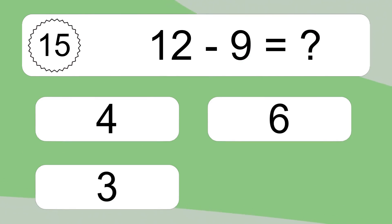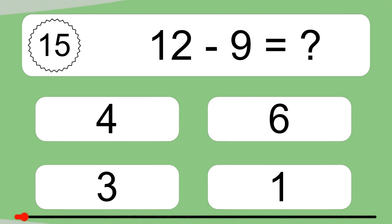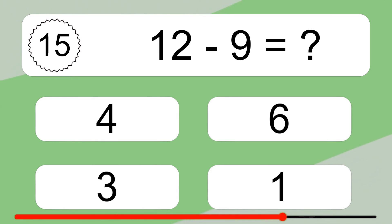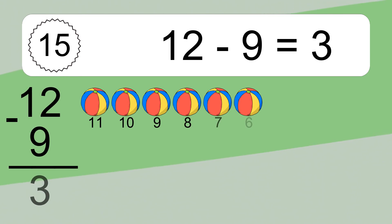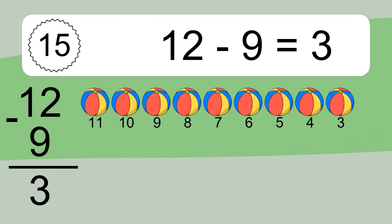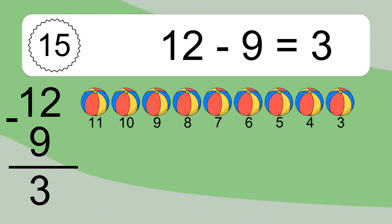12 minus 9 equals what? 12 minus 9 equals 3. Let's count it: 11, 10, 9, 8, 7, 6, 5, 4, 3.